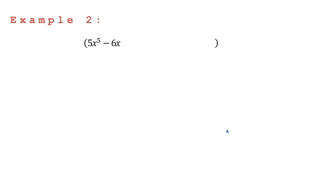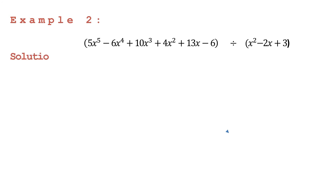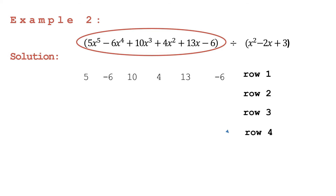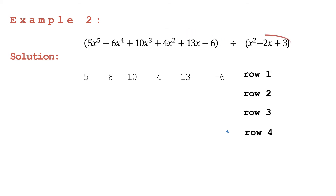Let's go to the next example. We will divide these polynomials following the same process. The dividend is already arranged in decreasing power of x and has no missing terms, so let's write the numerical coefficients: positive 5, negative 6, positive 10, positive 4, positive 13, and then negative 6. Take note that we have four rows here. Let's proceed to our divisor.